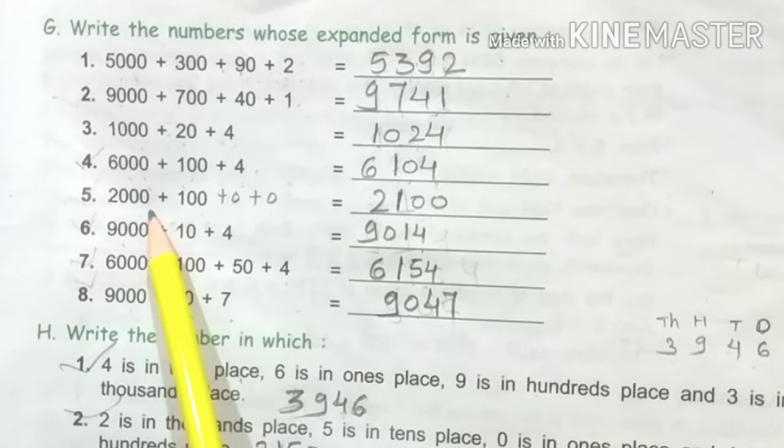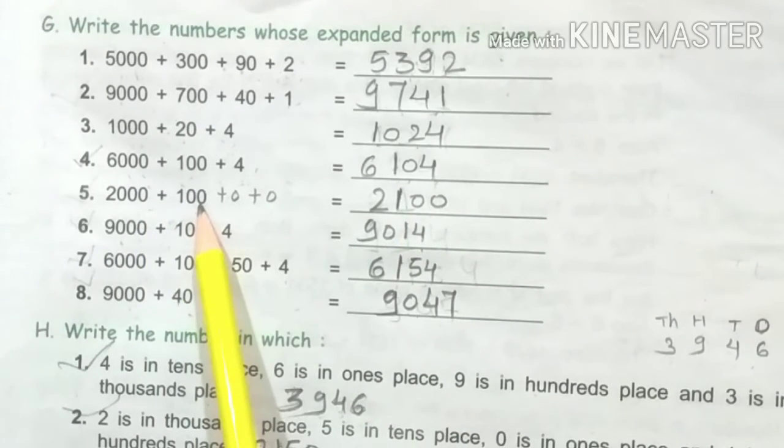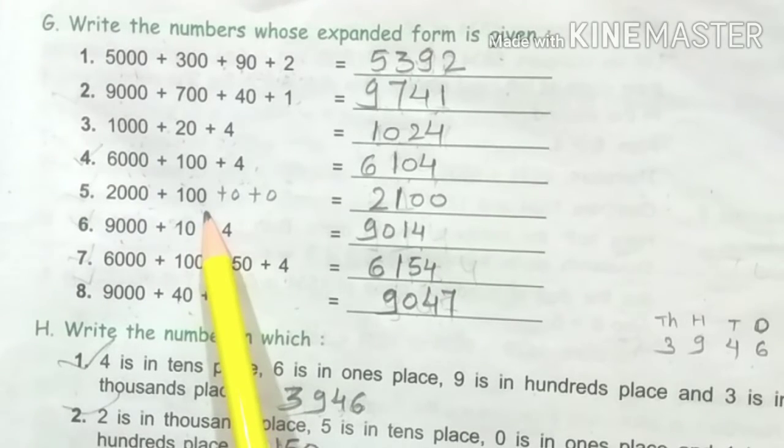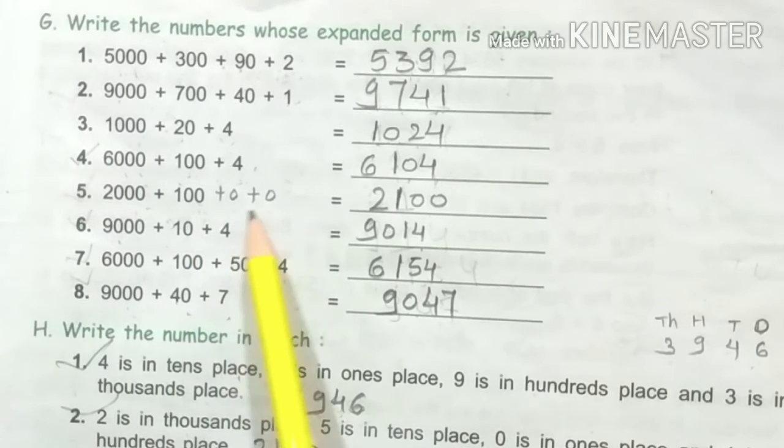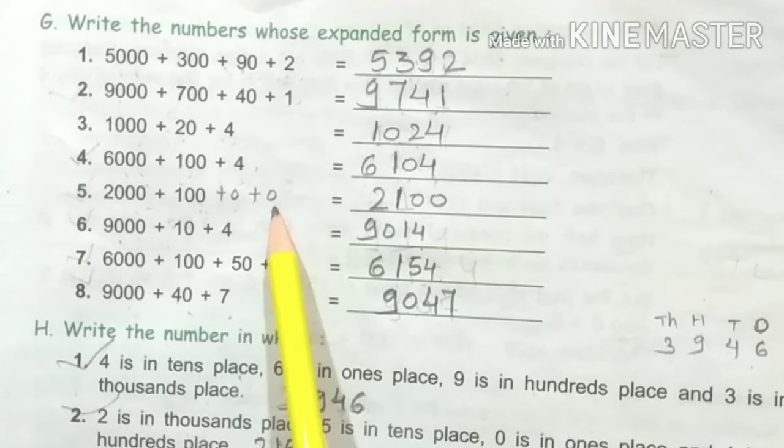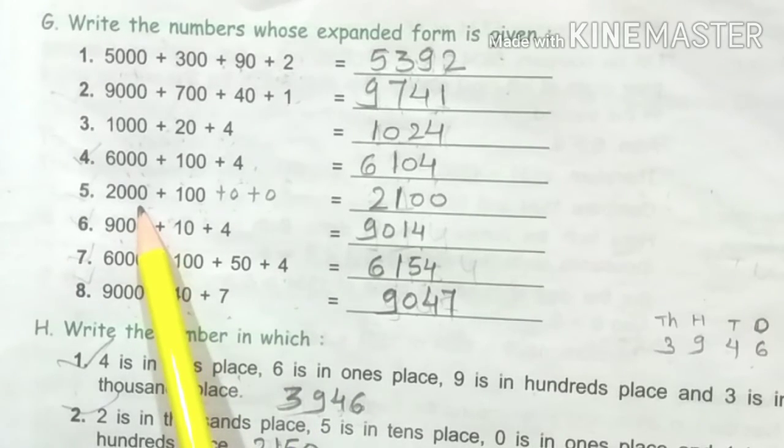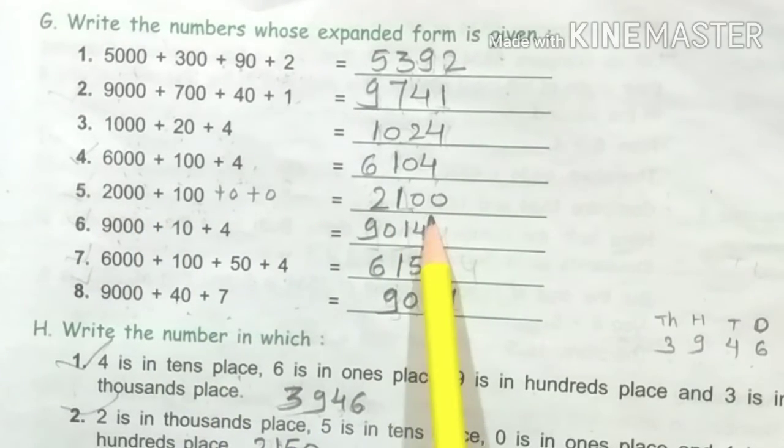2000 plus 100. Here we have tens and ones which are not showing, so 2100 is the answer.